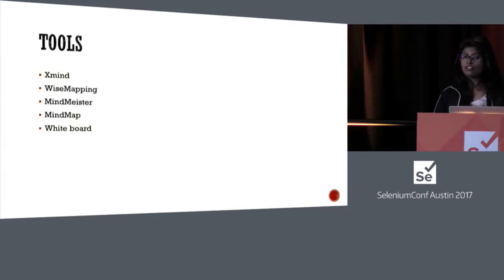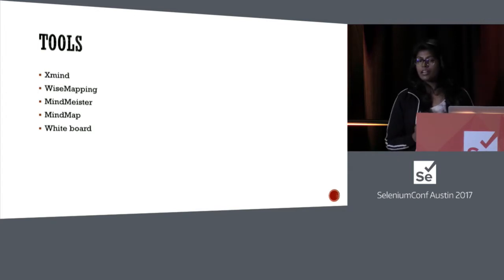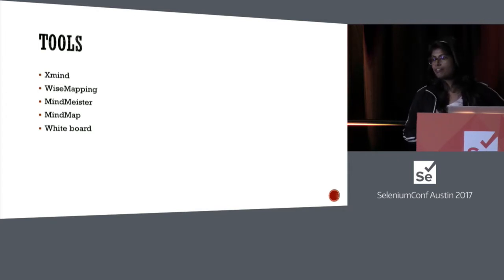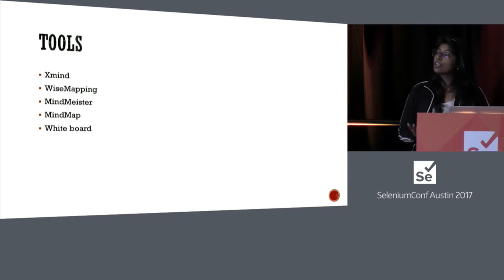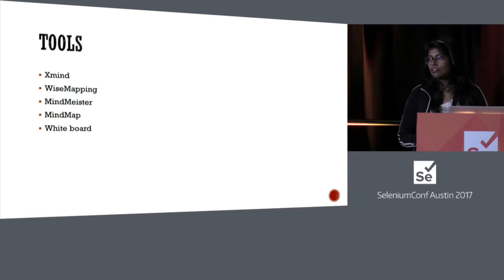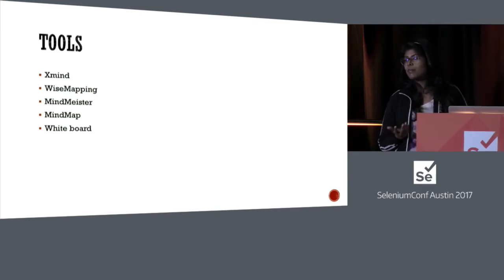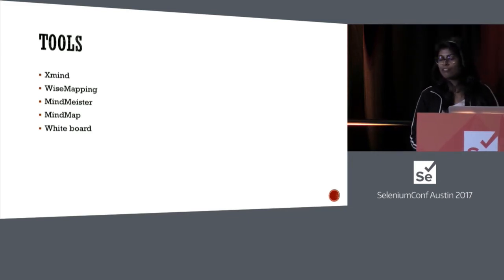So how can we create a mind map? First, pick a tool. There are many tools available online — some paid, some free — providing enhanced functionality. If you're a two- to three-member team, you can just use a whiteboard or a piece of paper. You don't have to use any tool. It's creativity which needs to come out, so what better than a sketch pen, a sketchboard, and a piece of paper to just let it flow.